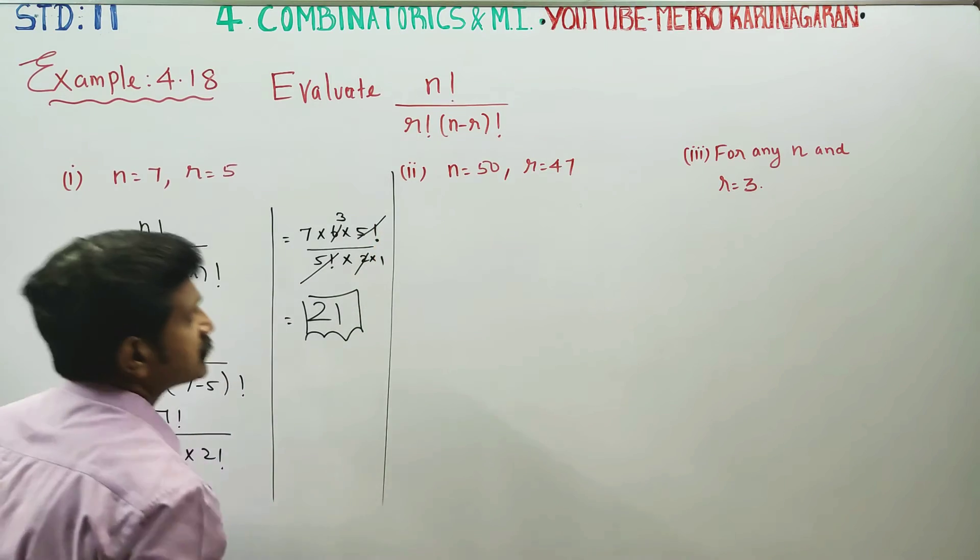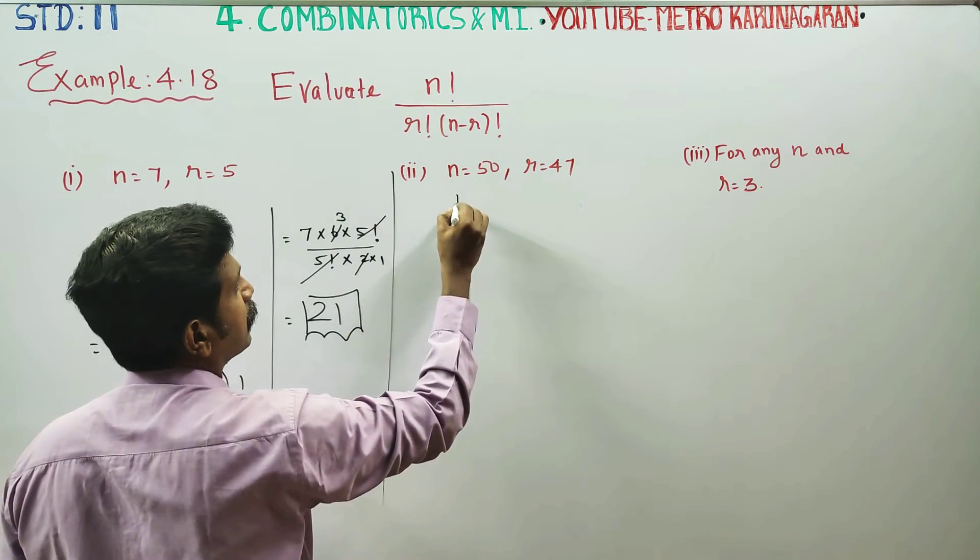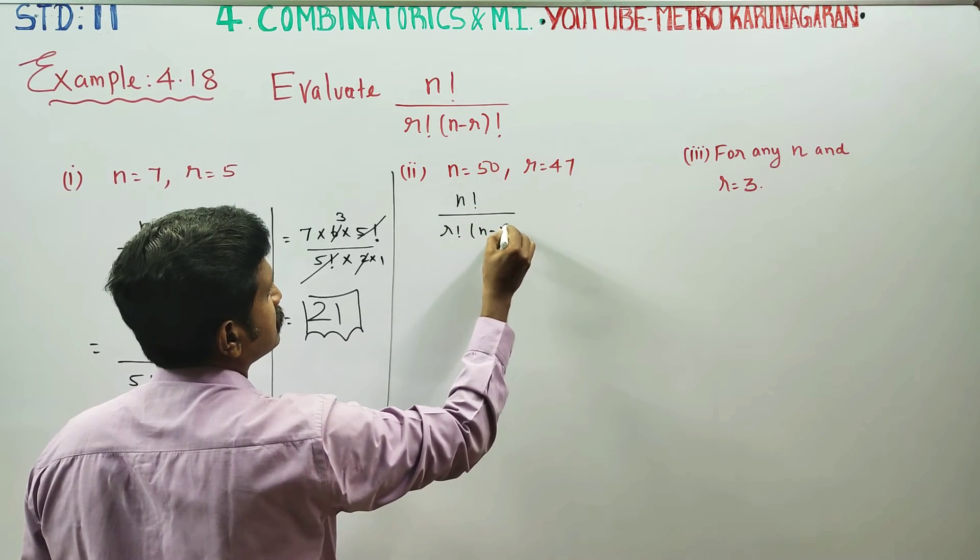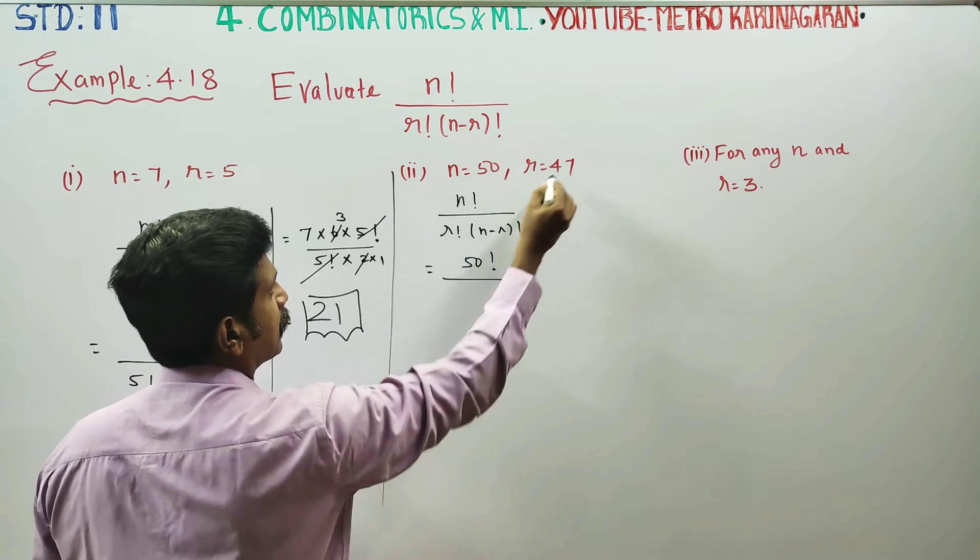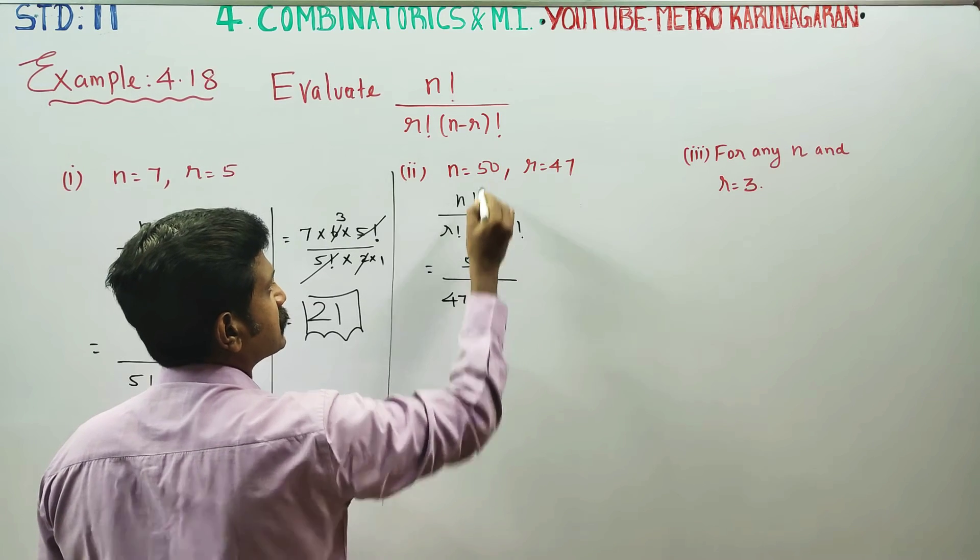Second problem, n is equal to 50, r is equal to 47. In the formula, n factorial by r factorial into n minus r factorial. That is why n factorial by r, r is equal to 47 factorial. n minus r, 50 minus 47 factorial.